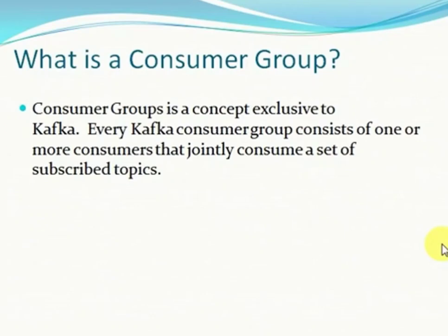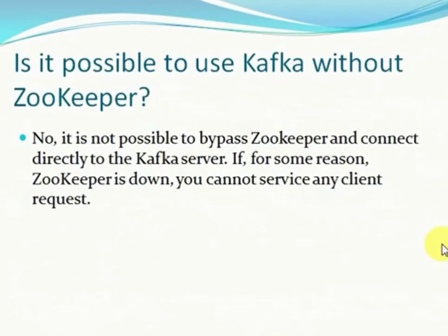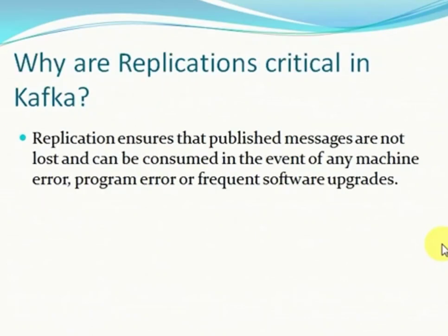What is a consumer group? A Kafka consumer group consists of one or more consumers that join together to consume a set of subscribed topics. What is the role of Zookeeper? Kafka uses Zookeeper to store the offsets of messages consumed for a specific topic and partition by a specific consumer group. Is it possible to use Kafka without Zookeeper? No - if Zookeeper is down, you cannot service any client request. Zookeeper must be started before running Kafka.